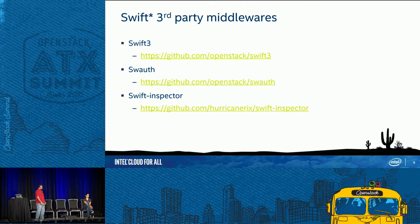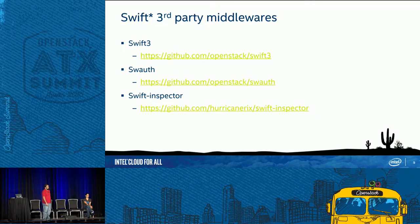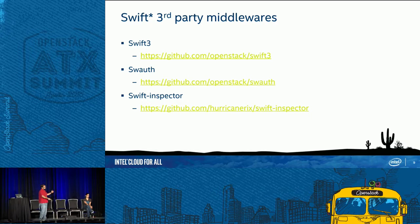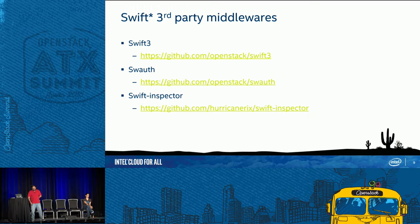Audience question: How does SWAuth compare with Keystone? SWAuth is a built-in middleware for authentication. If you're running Swift alone and don't need other OpenStack services, you don't have to run Keystone — SWAuth satisfies that criteria. Regarding algorithm security comparison between SWAuth and Keystone, the presenter had not compared them directly. Swift Inspector is a very good middleware for debugging. With that, Nahati will take over and talk about WSGI applications.